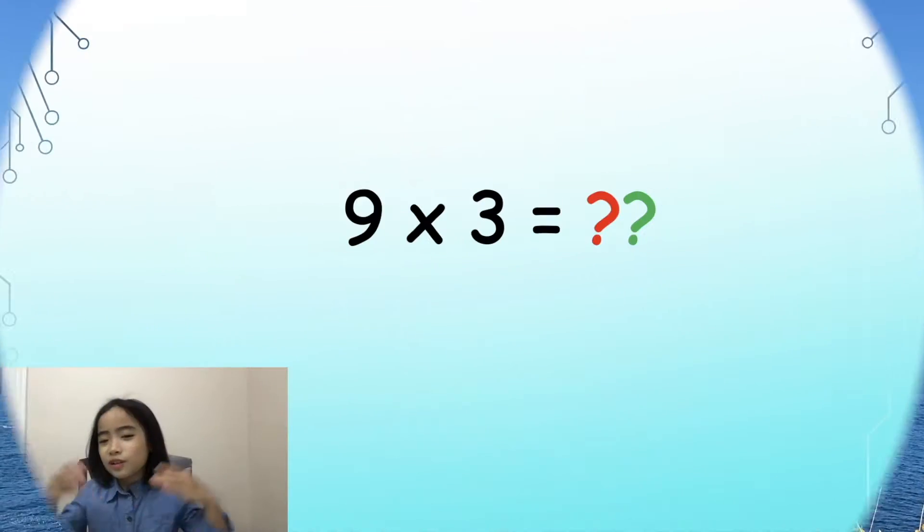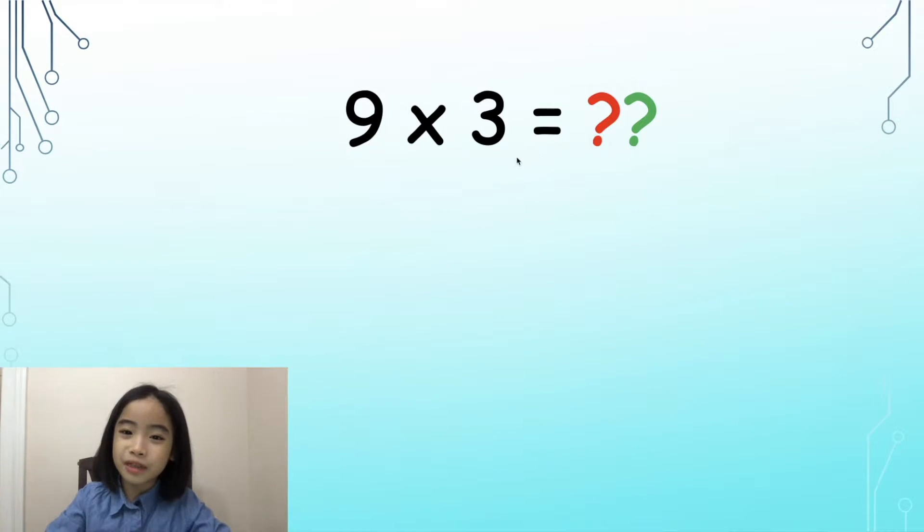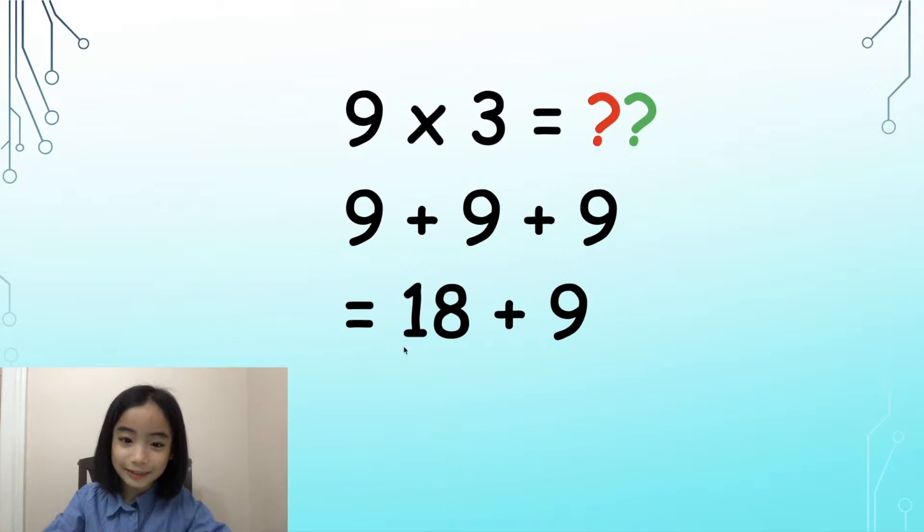So, what is 9 times 3? Well, 9 times 3 is the same thing as 9 plus 9 plus 9. So, there are three 9's all added together. 9 plus 9 equals 18. 18 plus 9 equals 27. So, here is our answer.